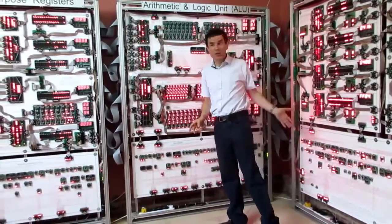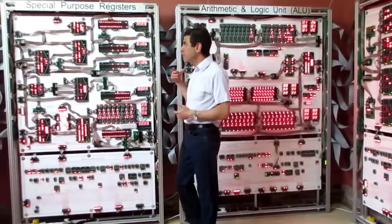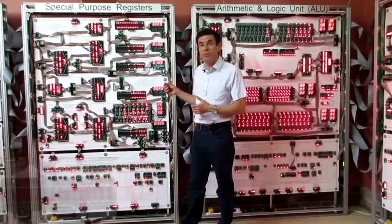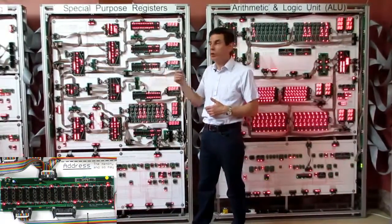As well as the general purpose registers and the ALU which does the sums, we have some special purpose registers for doing things in the processor. For example, we have the program counter which keeps track of where you are in a program.